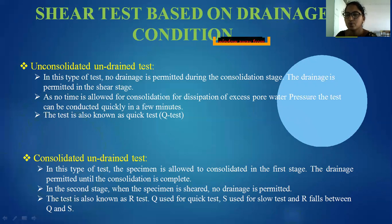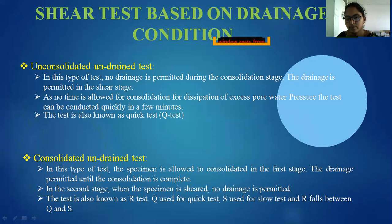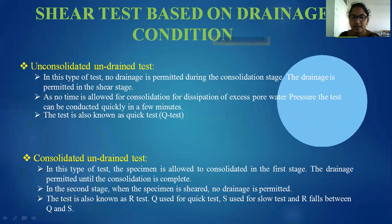Since no time is allowed for dissipation of excess pore water, the unconsolidated undrained condition is very quick and takes only a few minutes. In the consolidated undrained test, when the specimen is sheared — that means fails — no drainage is permitted during shearing. The triaxial test is conducted under three stresses: vertical load, air pressure, and water pressure. In this test, the specimen is allowed to consolidate in the first stage, and drainage is permitted until consolidation is completed.